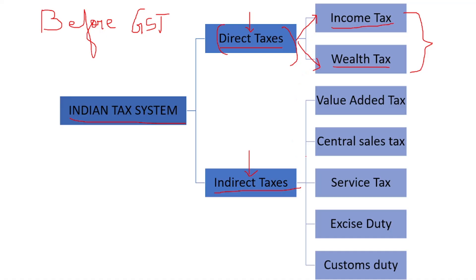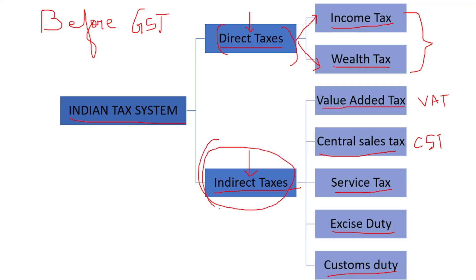For indirect taxes, there were many taxes. That is Value Added Tax, which is known as VAT. Next, we had Central Sales Tax, which is known as CST. Next, we had service tax, excise duty, and custom duty. We will be seeing about only the indirect taxes, so let us discuss about all these five types of taxes.